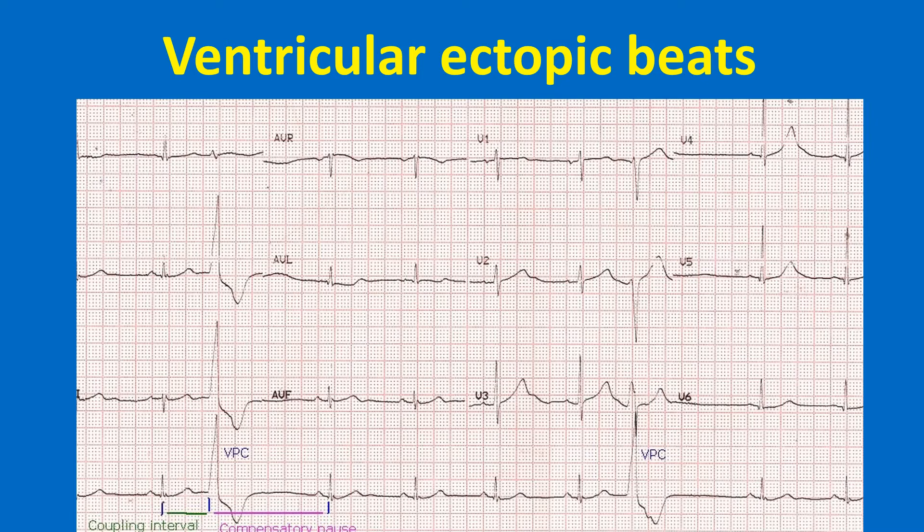There are two wide QRS complexes seen in the lead II rhythm strip. Both are of similar morphology, hence they are called monomorphic VPC. Monomorphic VPCs are usually unifocal and have the same coupling interval. Coupling interval is the interval between the onset of the previous normal QRS complex and the ectopic QRS complex. Ventricular ectopic is identified by the absence of a preceding P wave, bizarre wide QRS, and secondary ST-T changes.